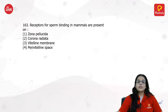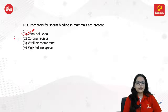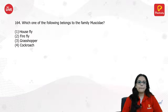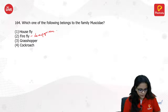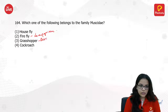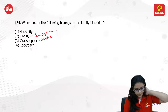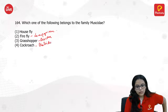Receptors for sperm binding in mammals are present in zona pellucida — a very direct question. Which of the following belongs to the family Mucidae? Firefly is Lampyridae. Grasshopper is Acrididae. Cockroach belongs to Blattidae. Mucidae is housefly.